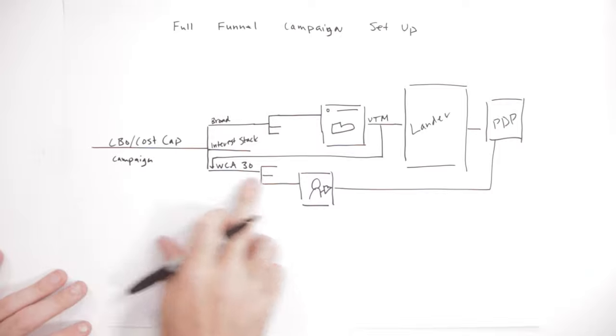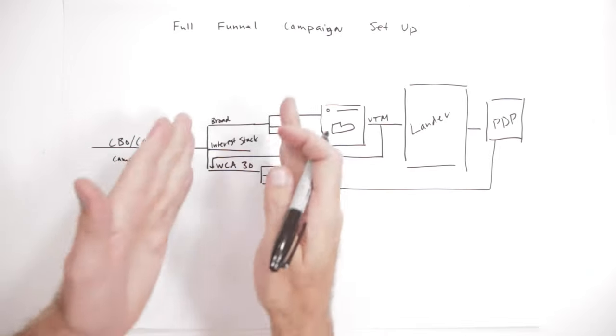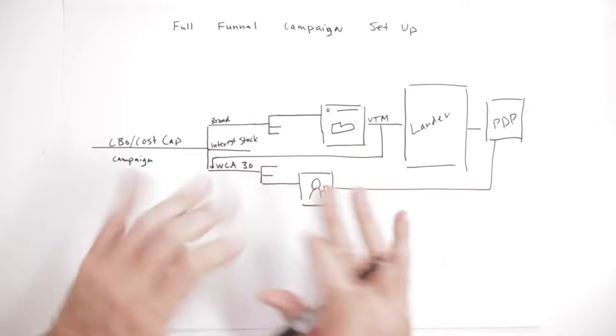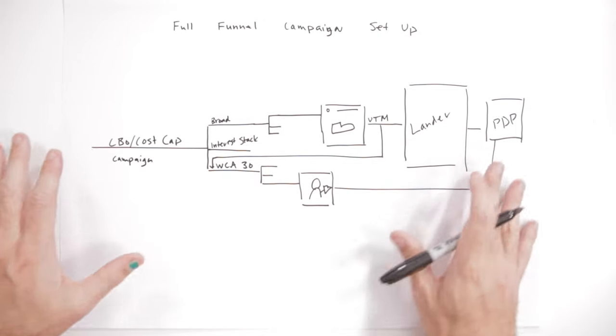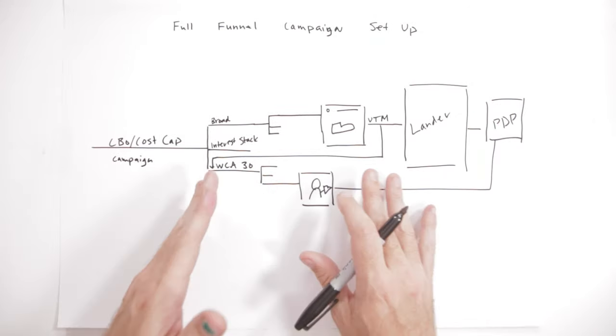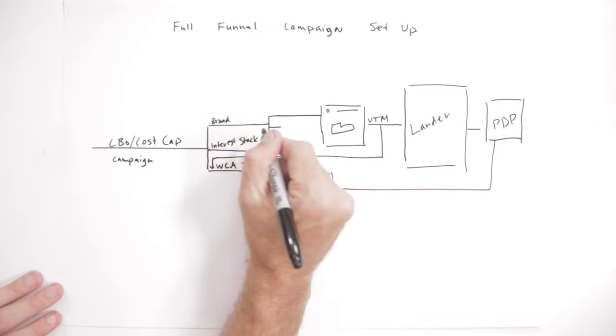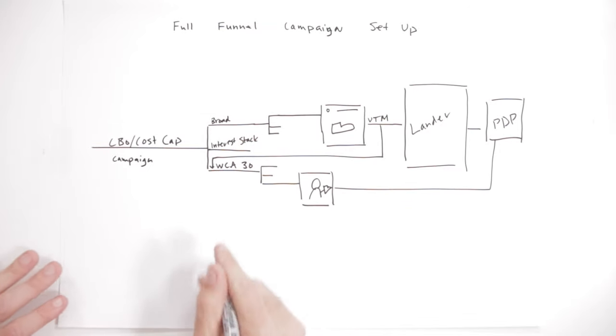Now a lot of times the concern will become that Facebook, when you're running CBO with remarketing and each of these, will begin to allocate the budget too much to remarketing. Well one, that's not true. Facebook does not do this. We run this in countless, countless campaigns. It allocates it appropriately relative to the outcome. And the key is to have a variable cost cap relative to prospecting and remarketing.